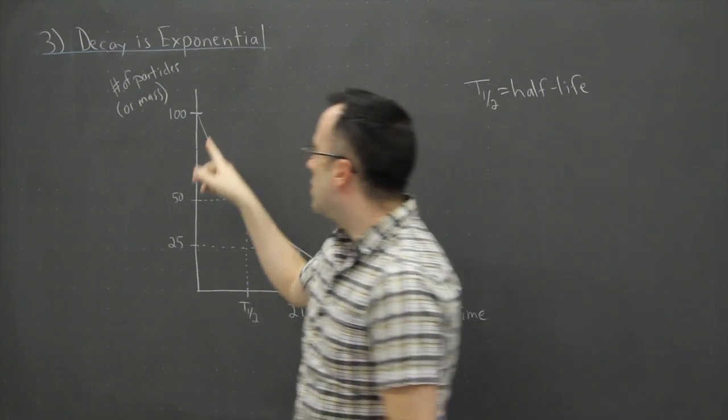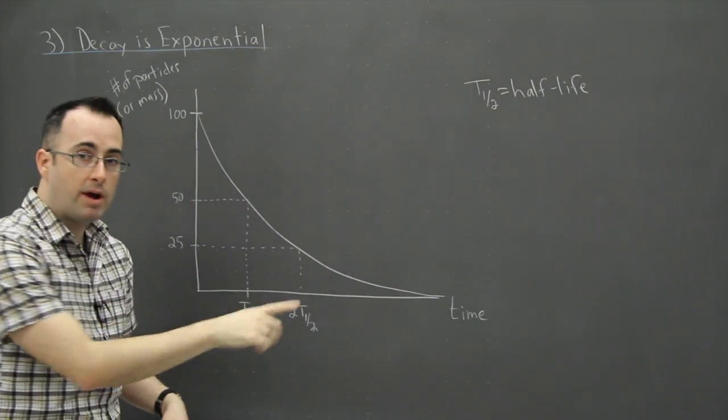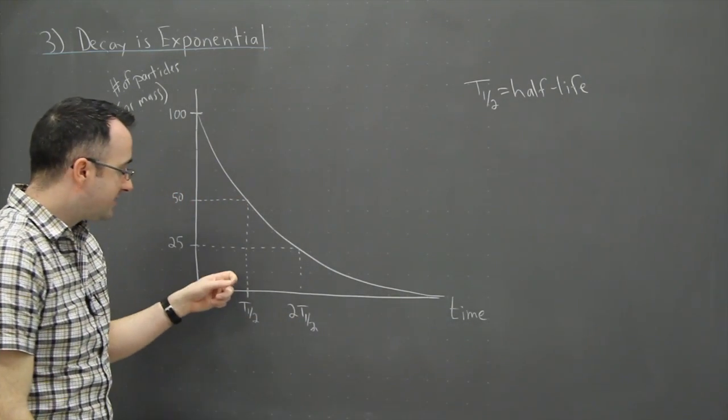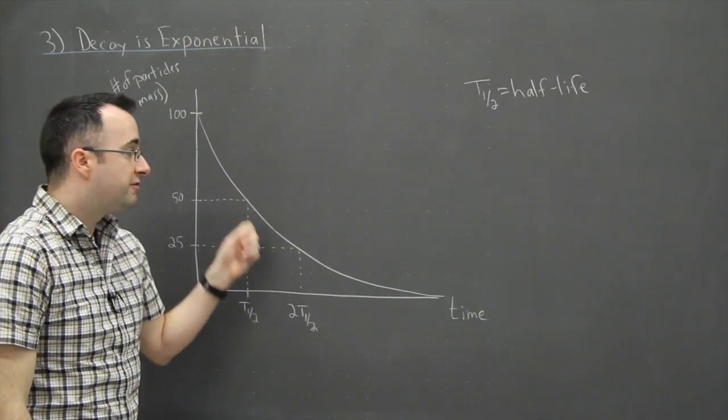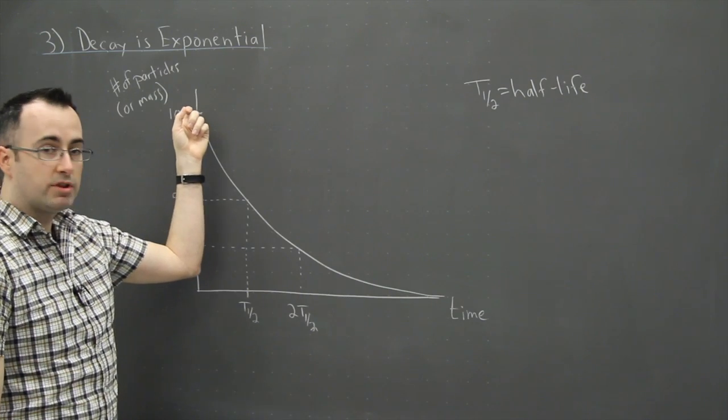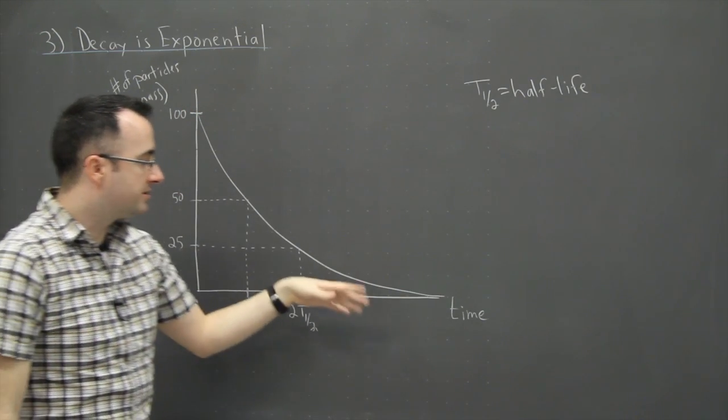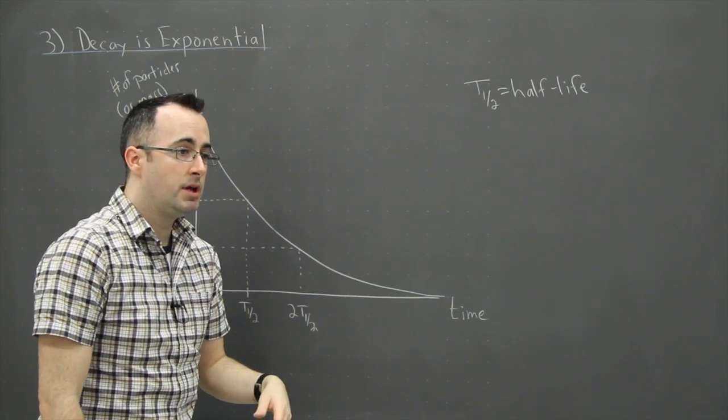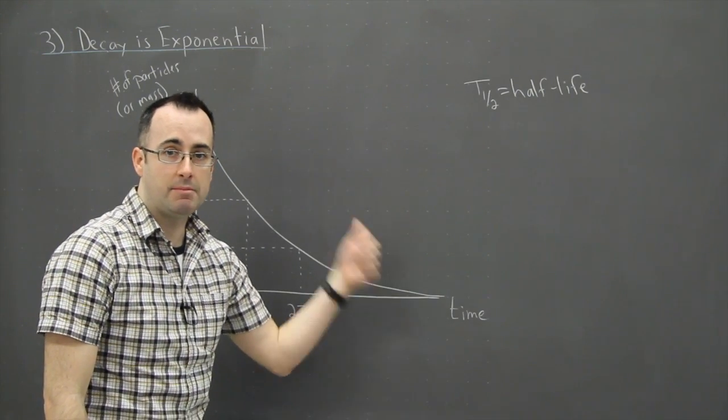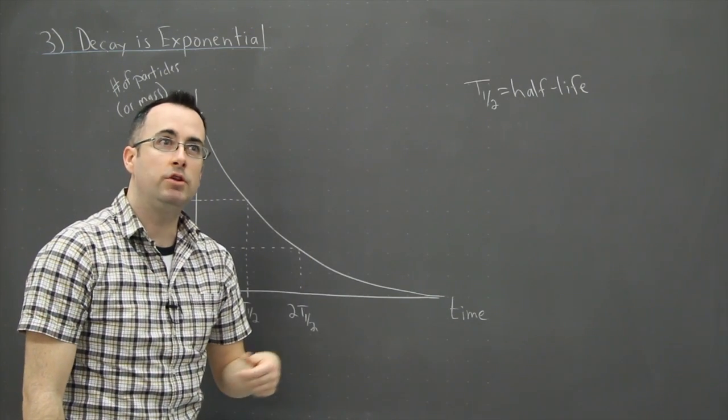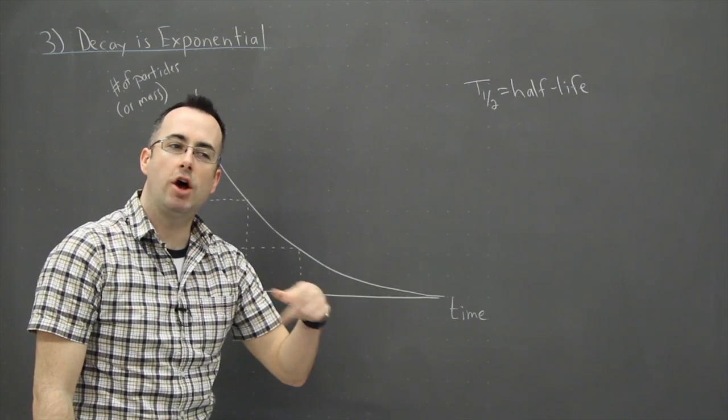So the half-life is something that's actually quite important, because that's the time it takes for the mass or the number of particles to go down by half. So that means, you might ask, how long does it take to get to one-eighth of the amount of material you had? Well, then you just have to think, how many times have I gone down by half?